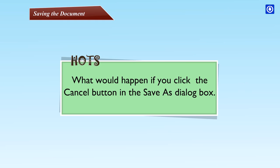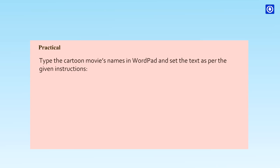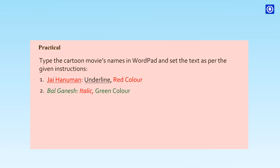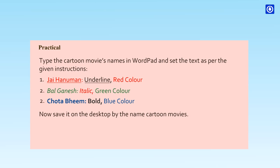What would happen if you clicked the Cancel button in the Save As dialog box? Practical Time: Type the cartoon movie names in WordPad and set the text as per the given instructions — Jai Hanuman: Underline, Red color; Bal Ganesh: Italic, Green color; Chota Bheem: Bold, Blue color. Now save it on the desktop by the name Cartoon Movies.